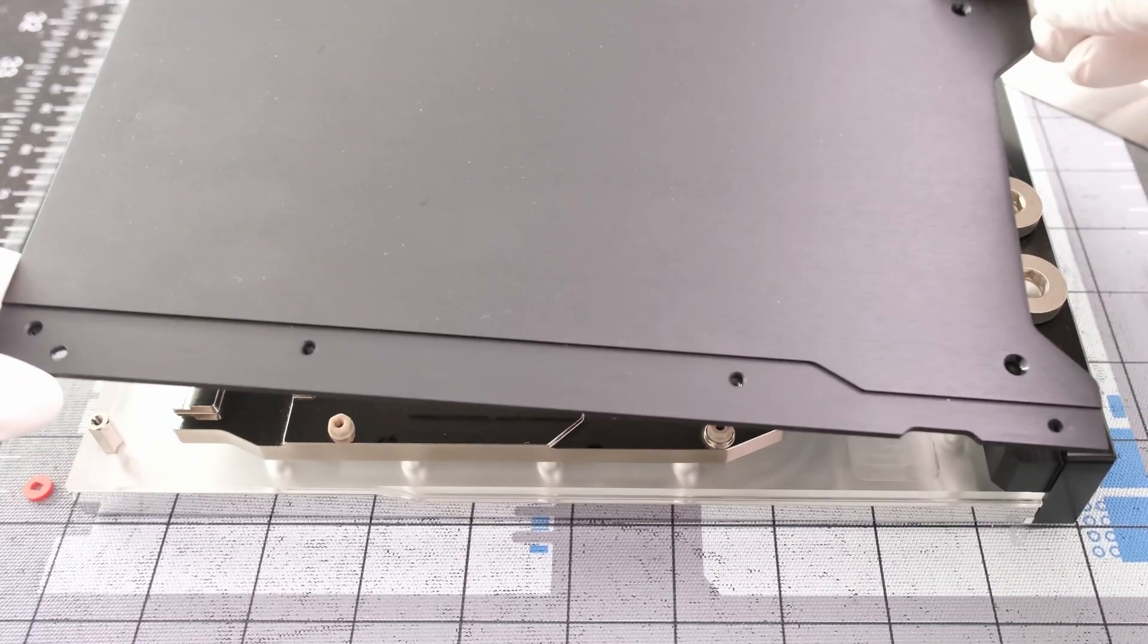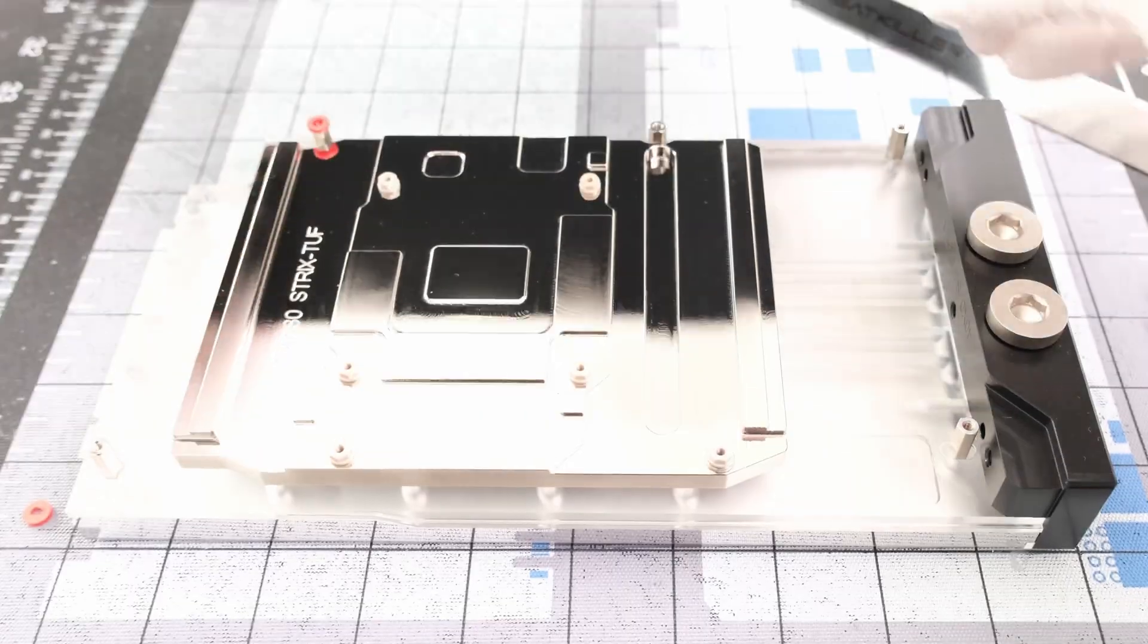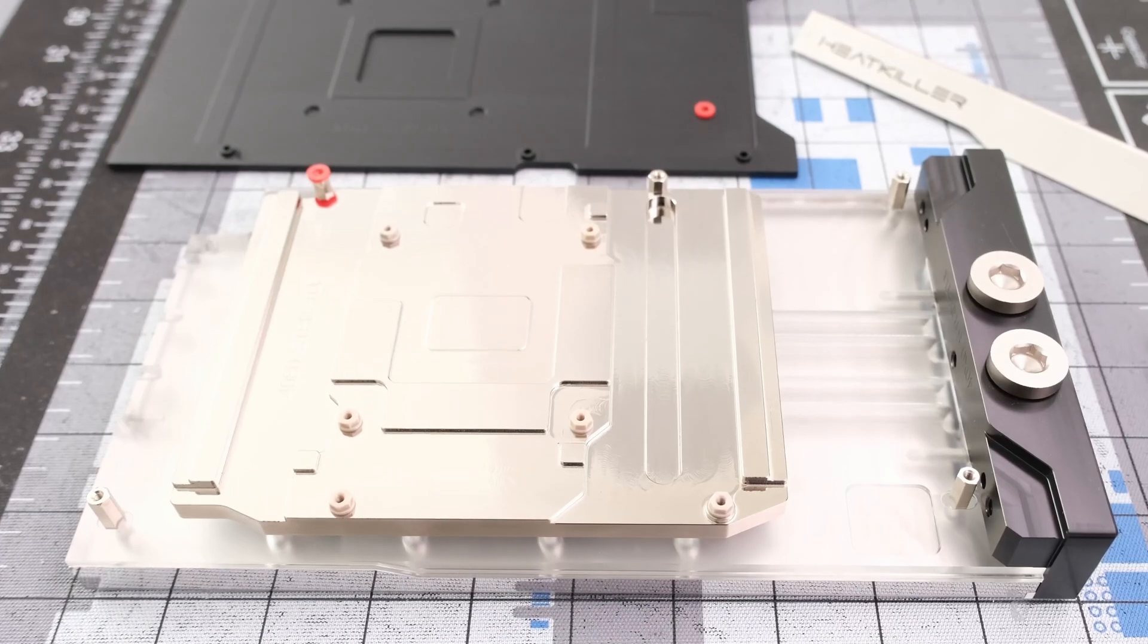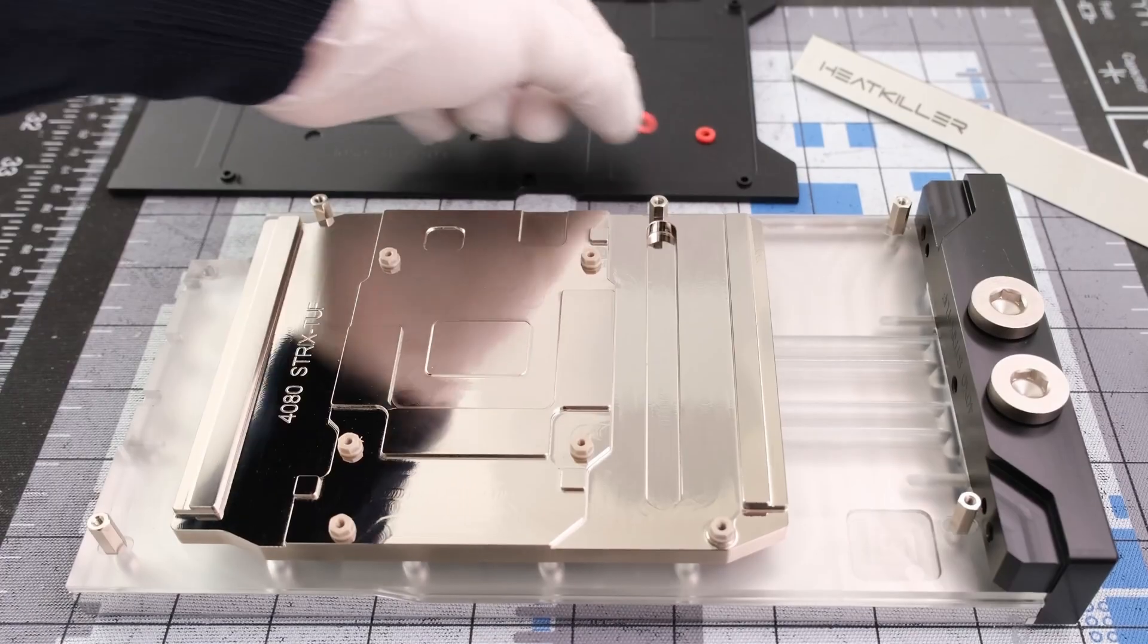Lifting the back plate, keep in mind there are two red plastic spacers to remove that are not used for installation. From there, we have thermal pads to install directly onto the front side of the PCB.